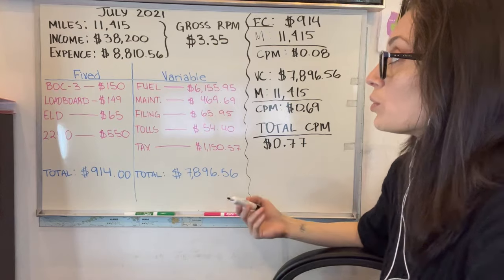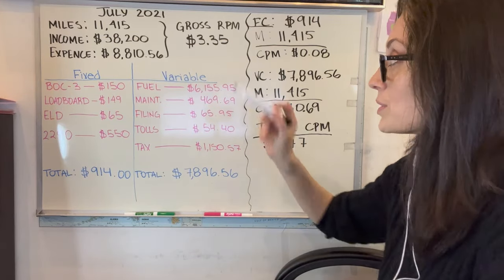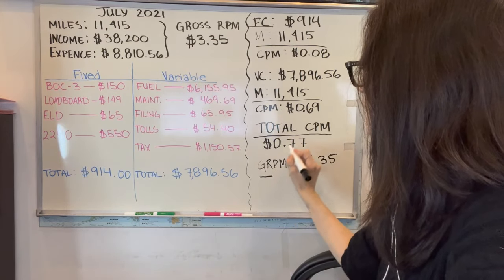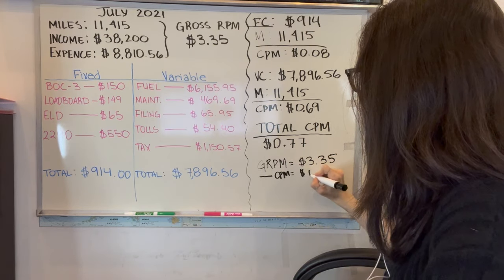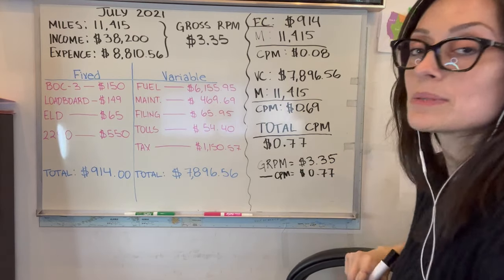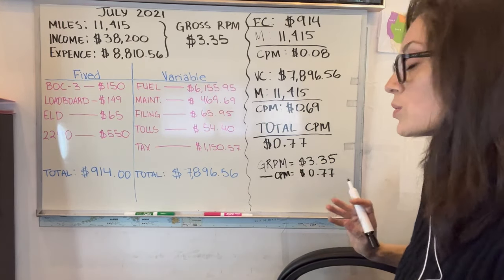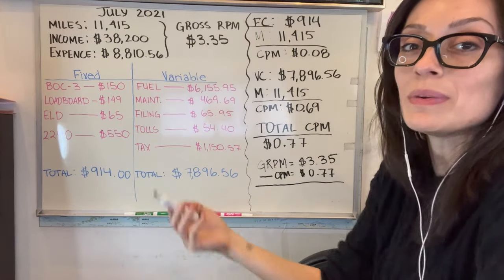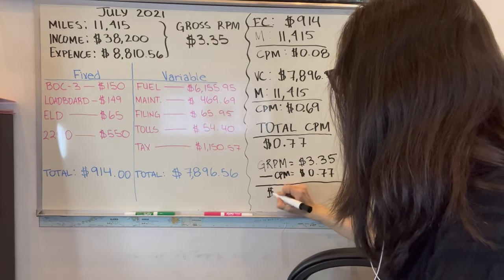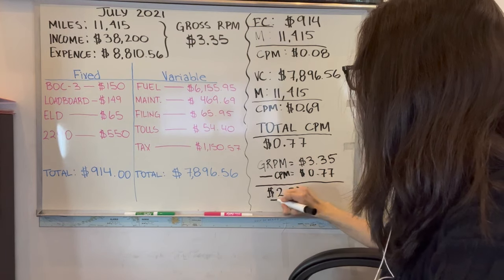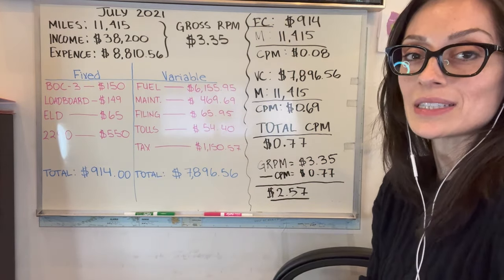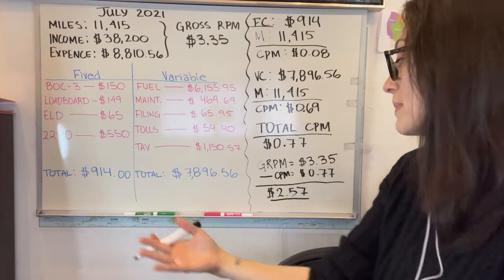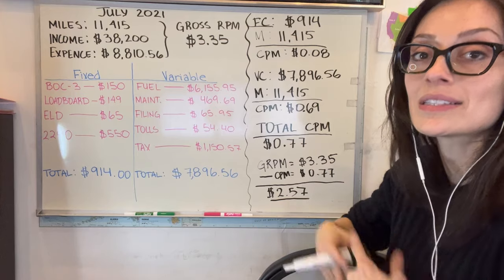Now you can calculate your actual profit using your gross rate per mile. Your gross rate per mile is $3.35, minus the total cost per mile of $0.77. Your net profit — your net rate per mile, meaning your actual profit — is $2.57 per mile. Because out of the $3.35 per mile that you earn, $0.77 of that goes towards fixed and variable expenses, so your net is actually $2.57 per mile.